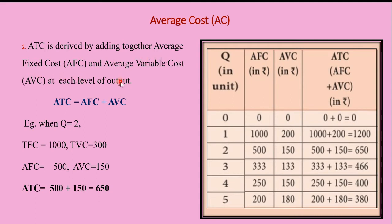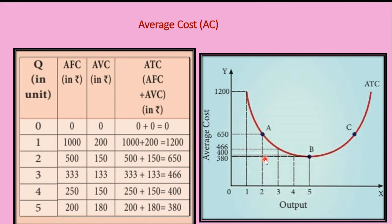The second way of calculating average cost is: ATC = AFC + AVC. For example, if AFC = 500 and AVC = 150, then ATC = 500 + 150 = 650. From the table: for output 1, AFC = 1000, AVC = 200, ATC = 1200; output 2: AFC = 500, AVC = 150, ATC = 650; output 3: AFC = 333, AVC = 133, ATC = 466; output 4: AFC = 250, AVC = 150, ATC = 400; output 5: AFC = 200, AVC = 180, ATC = 380.